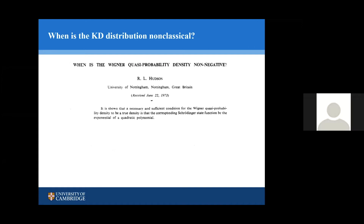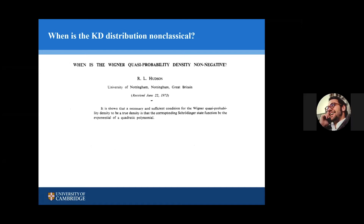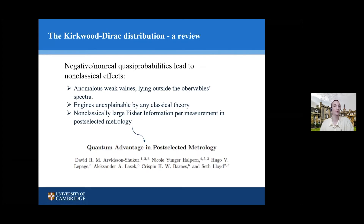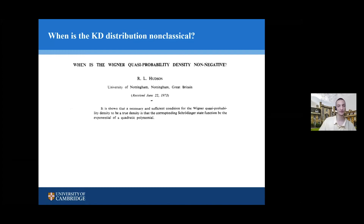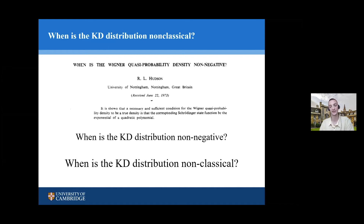We'd like to know when these quasi-probabilities are negative or non-real, since that's when we get signatures of quantum effects. The same question was asked of the Wigner function about 50 years ago and was answered really nicely — you can tell a paper's good when its abstract is that short. We wanted to ask the same question about the KD distribution: when is the KD distribution non-negative, or conversely, when does it go non-classical? When does it contain complex and negative probabilities? This is what we wanted to quantify.